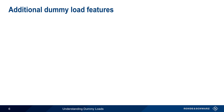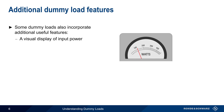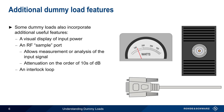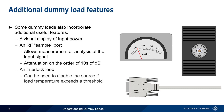Dummy loads are generally not user configurable, but some do incorporate additional useful features. The most common is some type of visual display showing the amount of input power received by the load. Another feature is an RF sample port, which allows measurement or analysis of the input signal — in most cases the signal has been attenuated by mid-tens of dB, but care should still be taken before connecting to a sensitive instrument such as a spectrum analyzer. A less common but very useful feature is an interlock loop, typically a simple multi-pin cable, which can signal to the source or another external device when the temperature of the dummy load crosses a defined threshold, allowing the transmitter to be shut down if the load can no longer safely sink the received RF power.